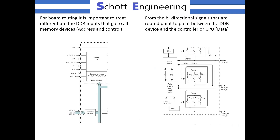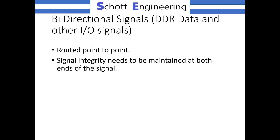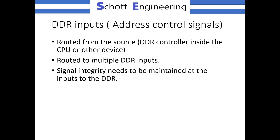For board routing, it is important to treat the address and control signals differently from the data signals. The data signals are typically routed point to point, and signal integrity needs to be maintained at both ends of the signal. DDR inputs — which are inputs to the memory sourced by the controller — are typically address and control. It's one output from the DDR controller going to multiple DDR devices, and signal integrity needs to be maintained at the inputs to the DDR.